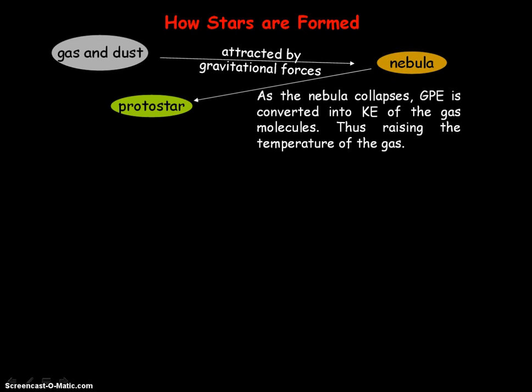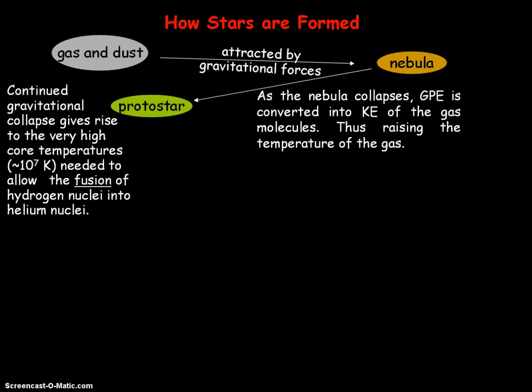The protostar continues to attract gas and dust, so we get continued gravitational collapse, giving rise to very high core temperatures. When temperatures reach the order of magnitude of 10 to the 7 kelvin, that's high enough to allow the fusion of hydrogen nuclei into helium nuclei — the hydrogen nuclei have enough kinetic energy to overcome the electrostatic repulsion between them, so the nuclei can come close enough for the strong nuclear force to take over and fuse them into helium nuclei.